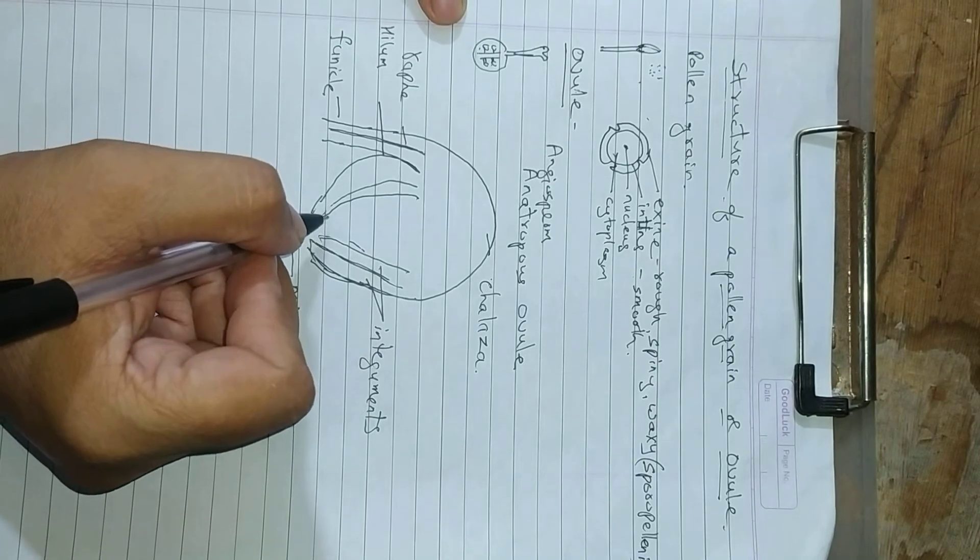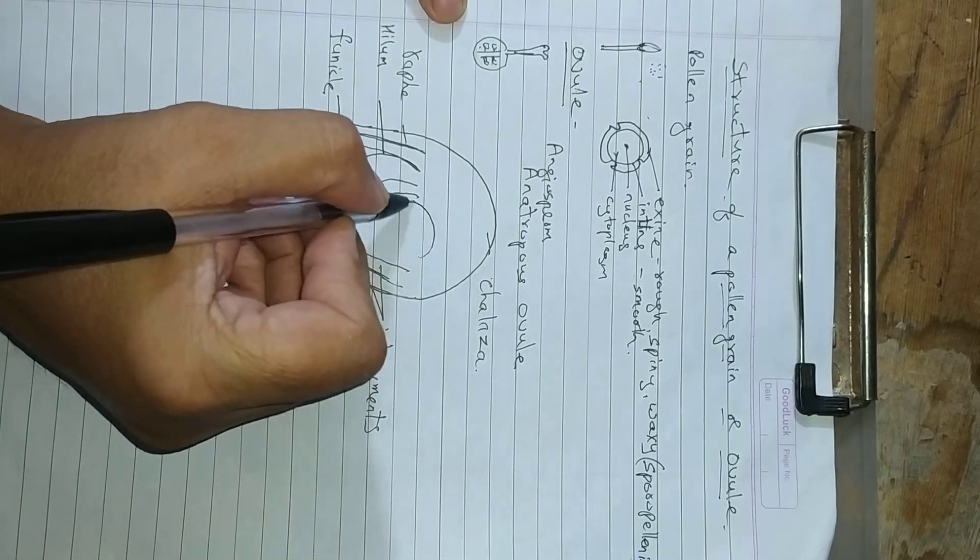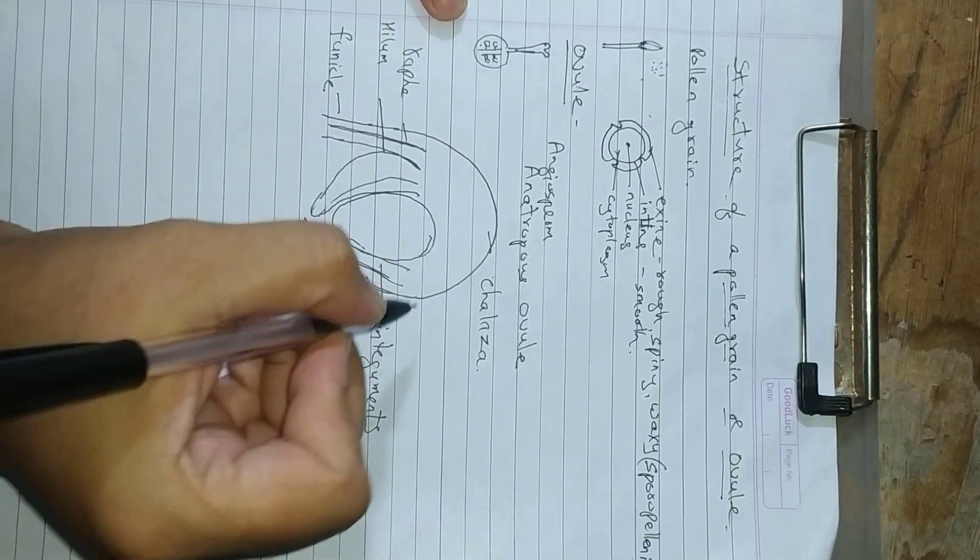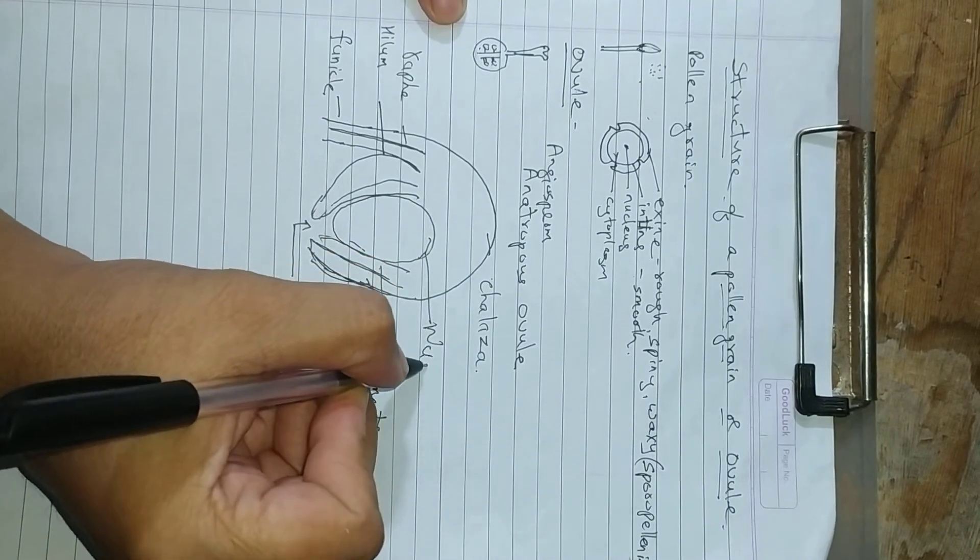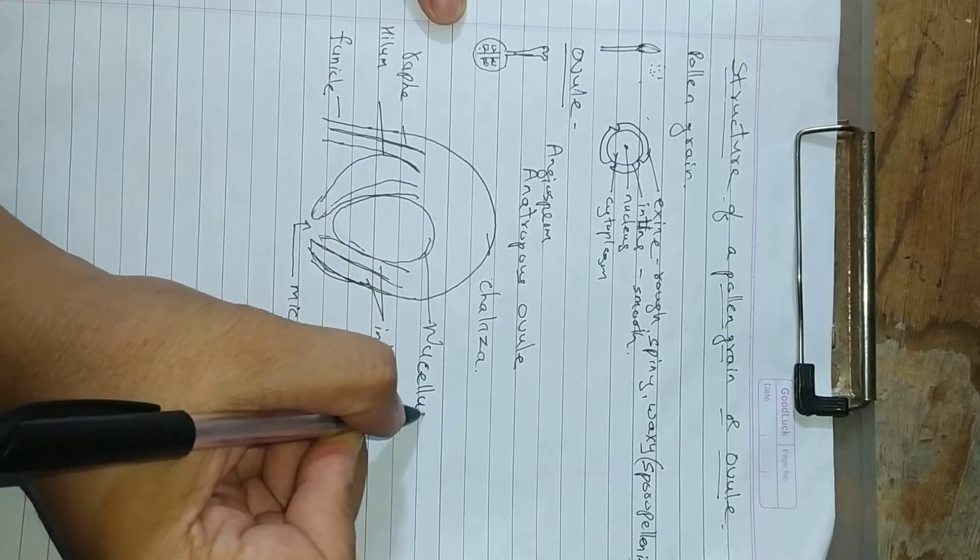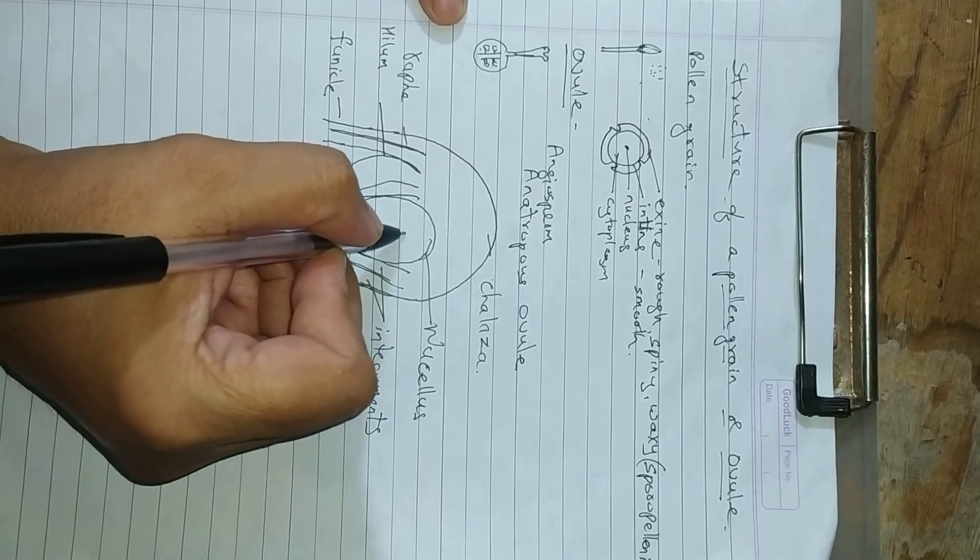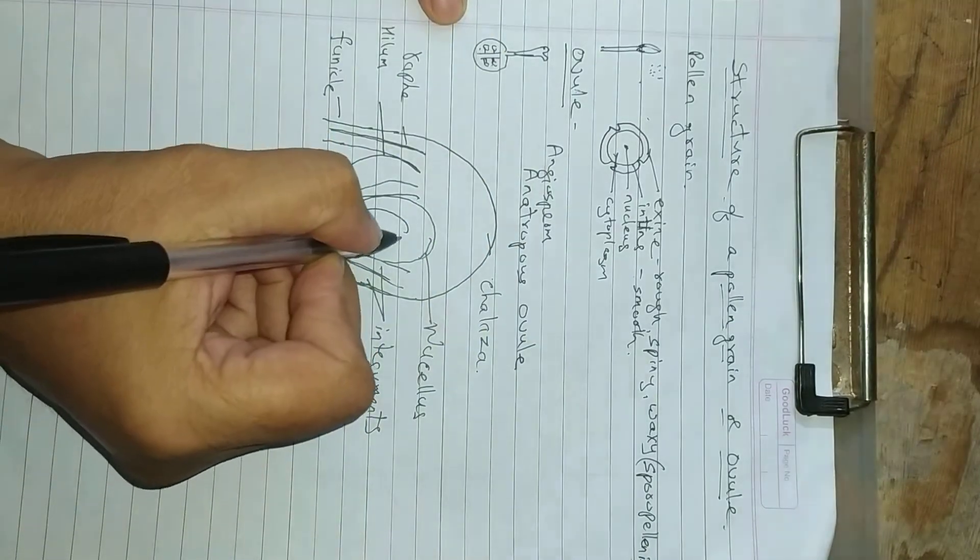Inside these integuments, there is a structure called as nucellus. Inside the nucellus, there is an embryo sac.